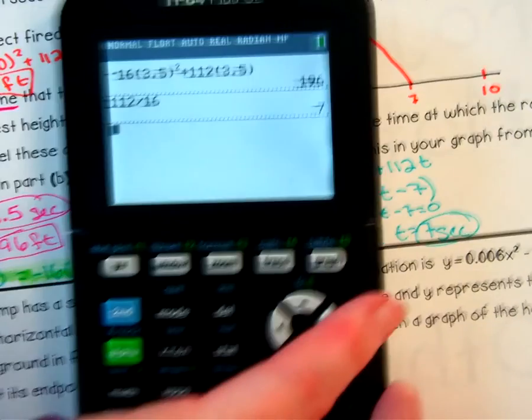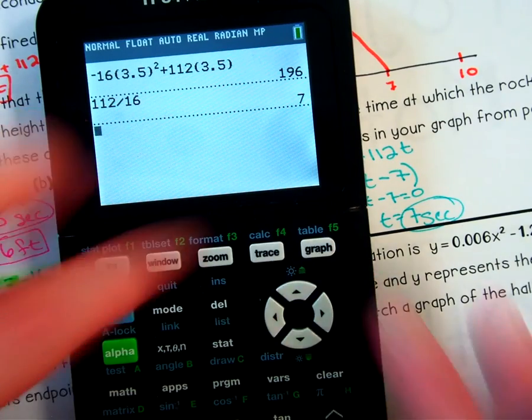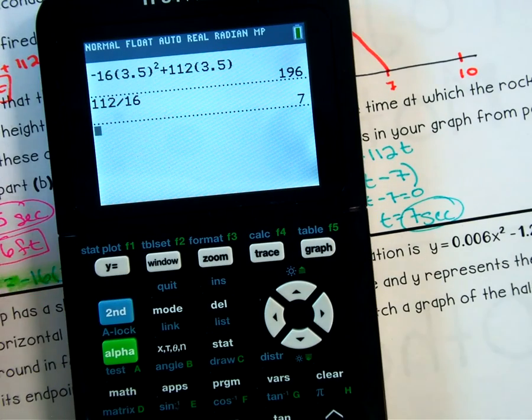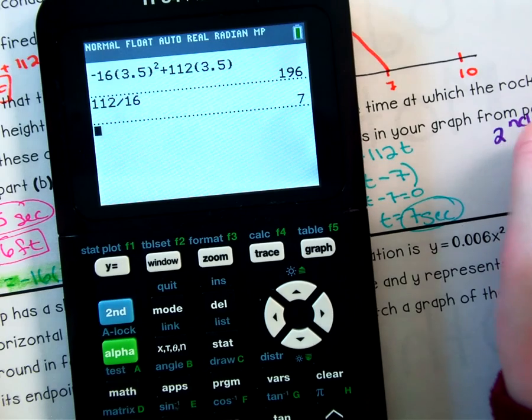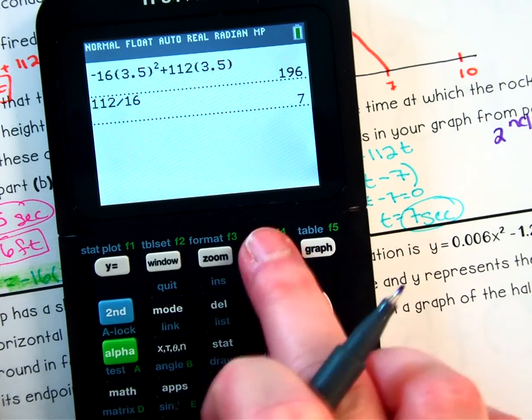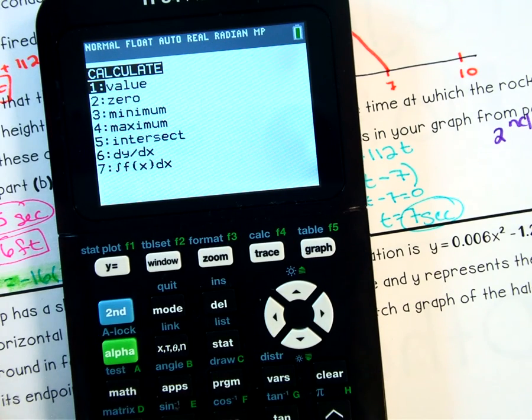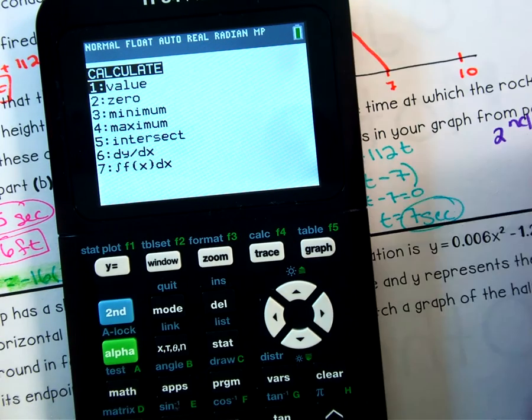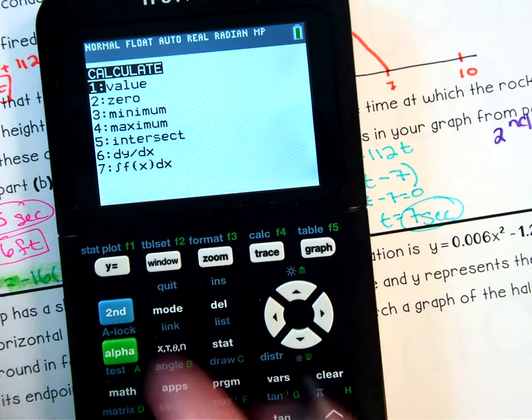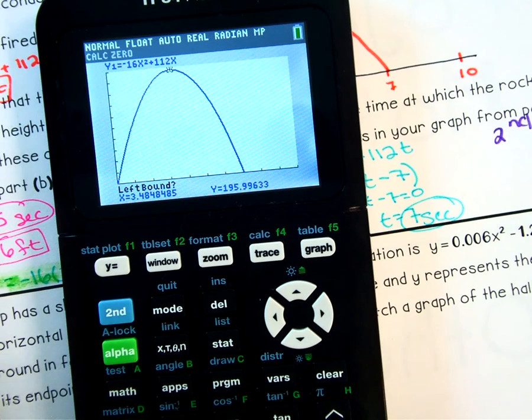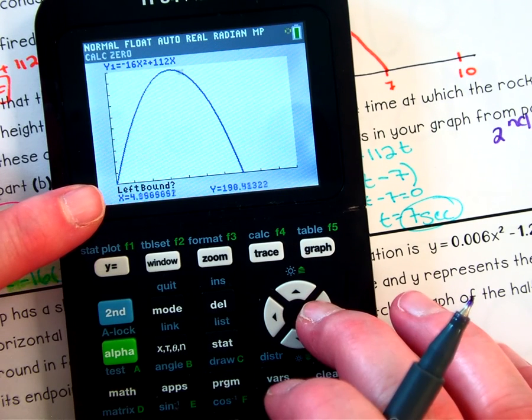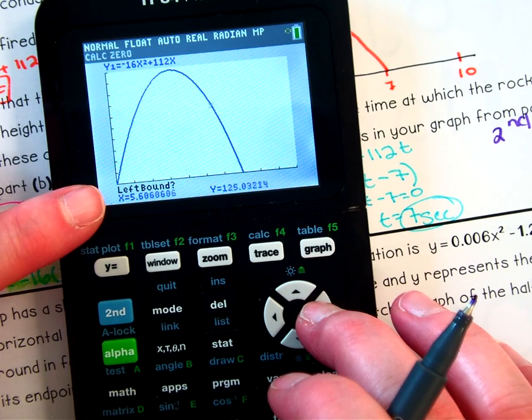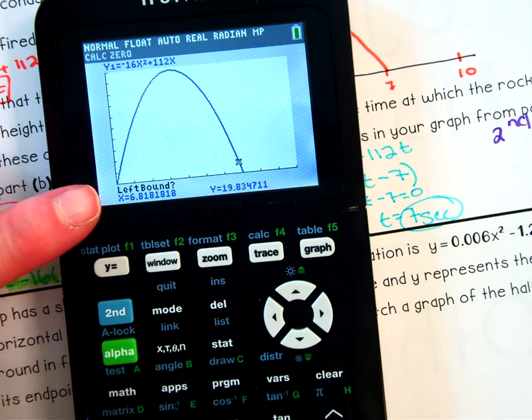So, again, you can find that in your calculator if we push 2nd and then trace, 2nd, trace, finding the 0 right there. That is choice number 2. So, again, it's going to ask you the same questions, left bound. Now, I want this 0 over here on the left. I'm sorry, on the right. I was thinking left because of left bound. I want this 0 over here on the right. So when you're finding your root, your left bound for this one is actually going to be kind of above it. It looks like it's above it.